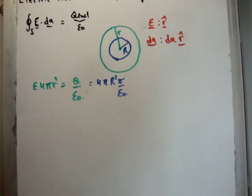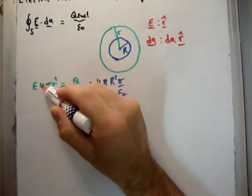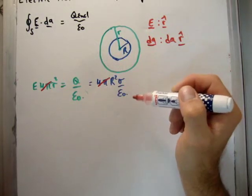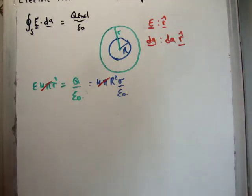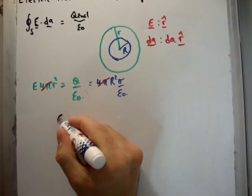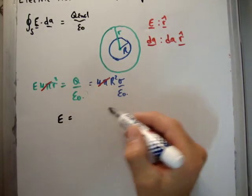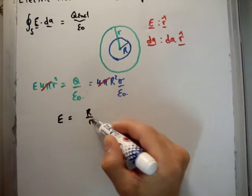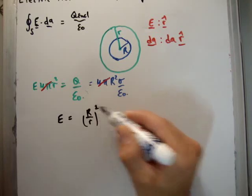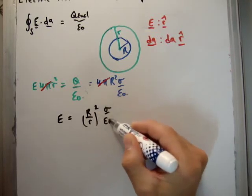So there is a small bit of cancellation which can occur here. So we have 4 pi, we have 4 pi, and I suppose that's really about it. So let's rewrite the electric field. So the magnitude of the electric field is going to be capital R over small r squared, sigma over epsilon zero.